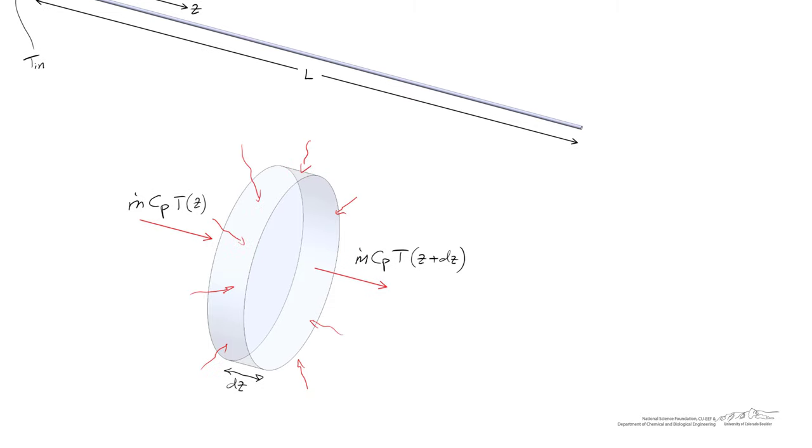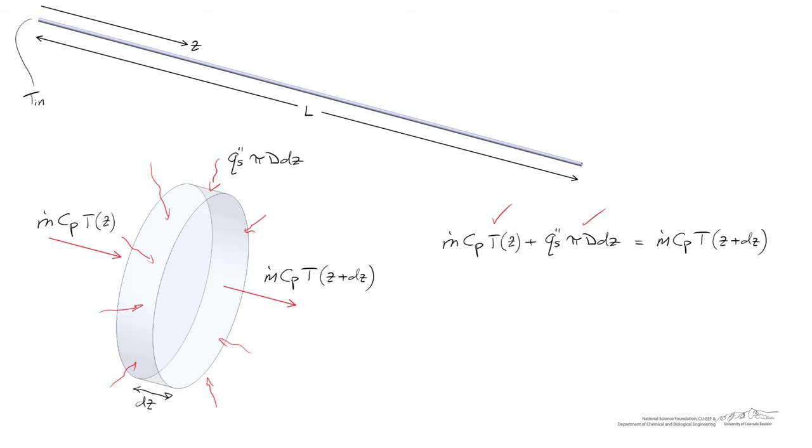Heat is also being added to the exterior of our control volume, and we'll call that our surface flux multiplied by the area around the perimeter of our control volume. So when we write this out, we have the two forms of energy entering the control volume, and that's going to equal the rate at which energy leaves the control volume.